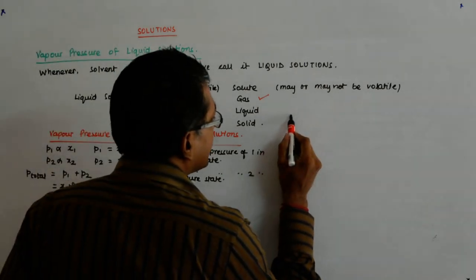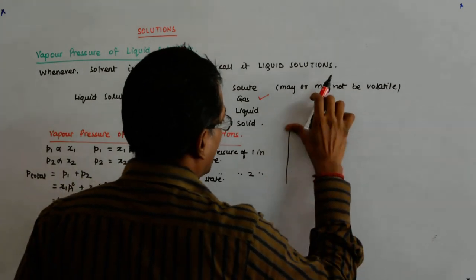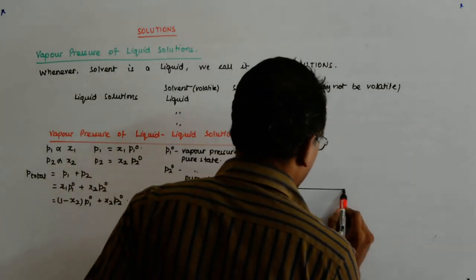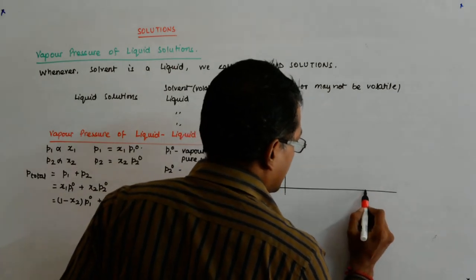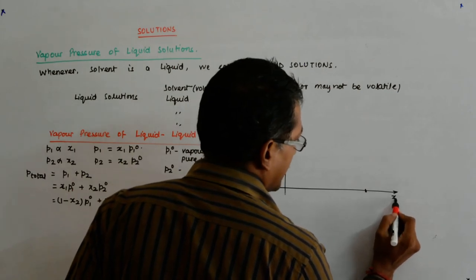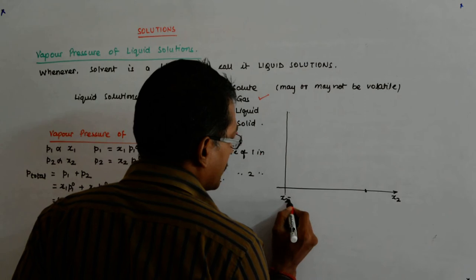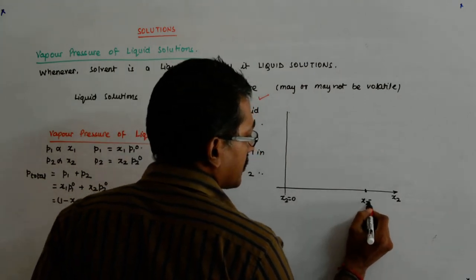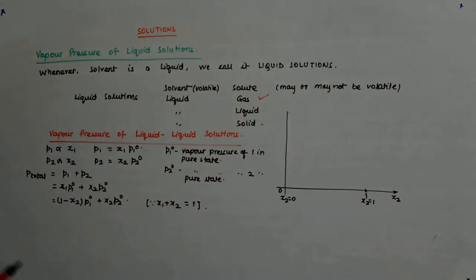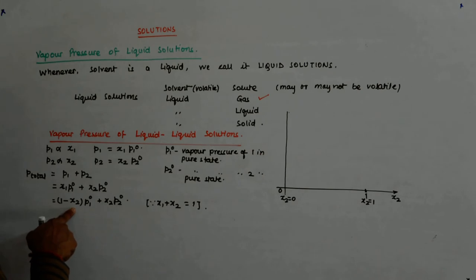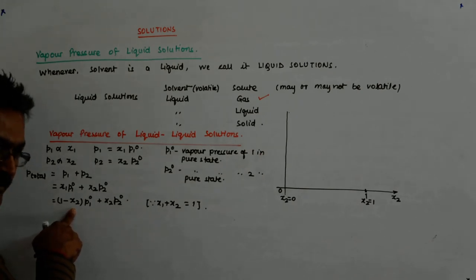What happens is: I have P_total on the y-axis and x2 on the x-axis. Here x2 = 0 and here x2 = 1. When x2 = 0, the second component is absolutely gone and only component 1 contributes. So at x2 = 0, we have P1° as our total pressure.